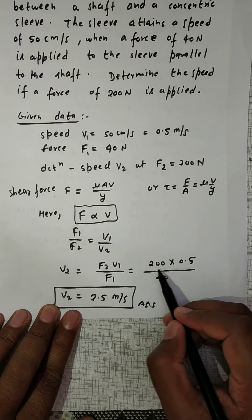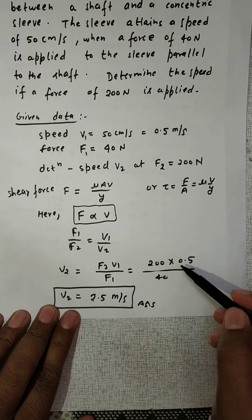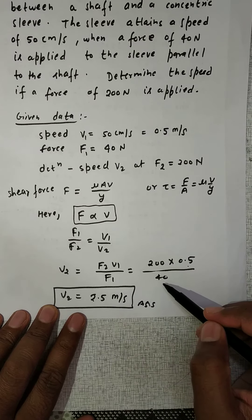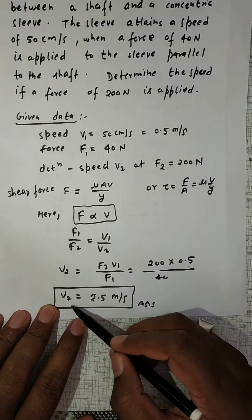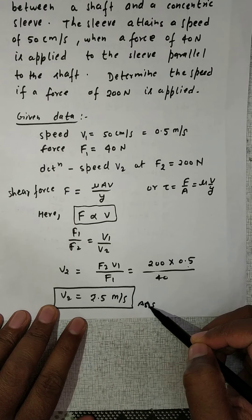So we will calculate here: F2 value is equal to 200, V1 is equal to 0.5, and F1 is equal to 40 Newton. So from here, the velocity equals 2.5 meters per second.